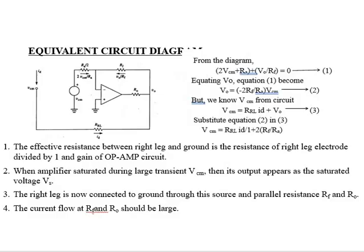Next, we are going to look at the equivalent circuit of the Right Leg Driven Amplifier. Since our body is acting as a source, this is the source, and there are two inputs. The final output is taken at V0.